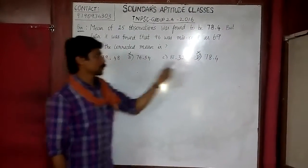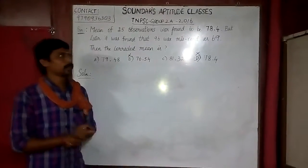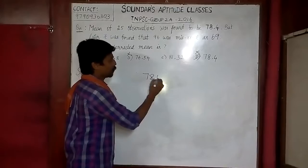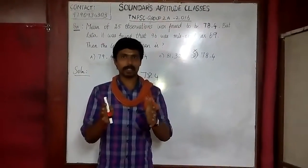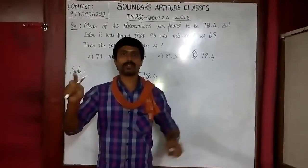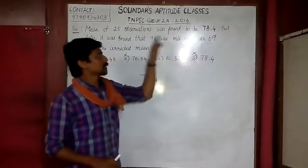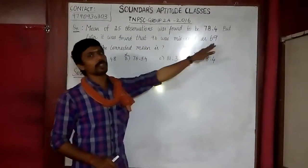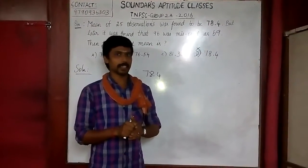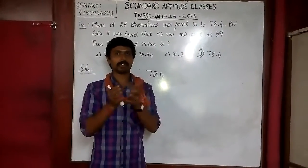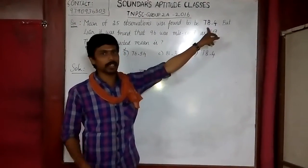The answer is 81.32 or 79.48. The existing average is 78.4. If you have 25 numbers and look at the misread value, it is 96 instead of 69. The increase in value is equal to 27 (that is, 96 minus 69). The other value remains 78.4.